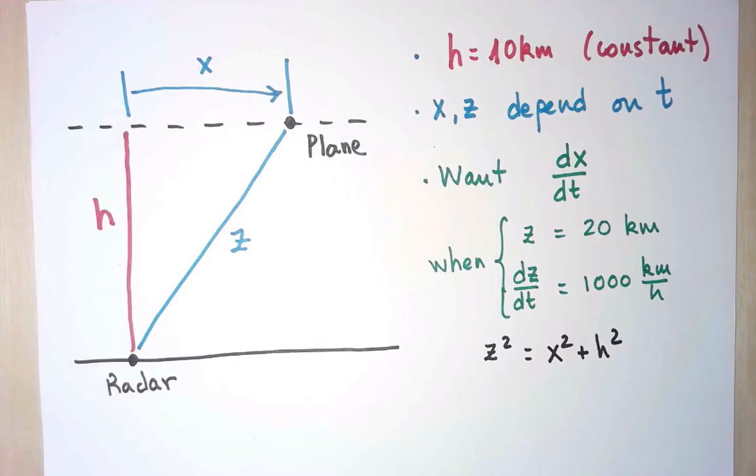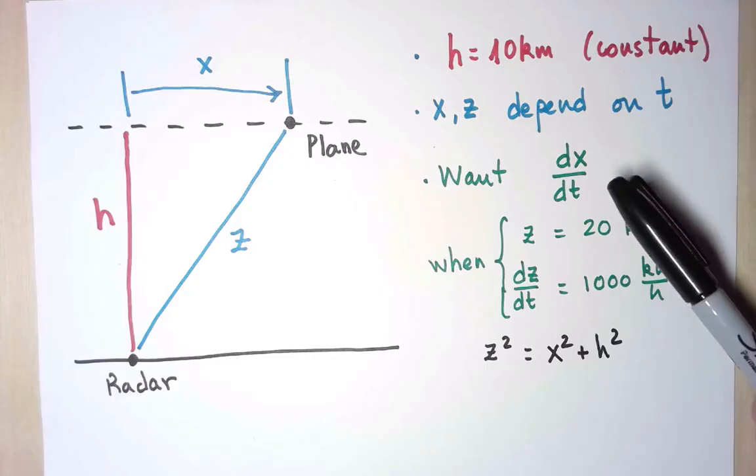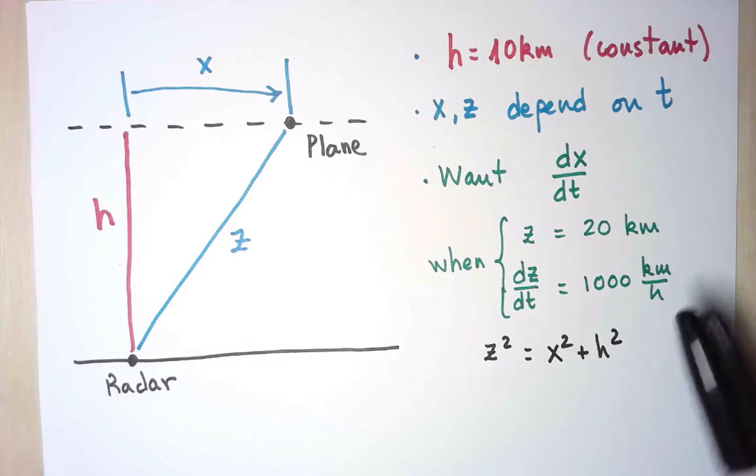What I've done so far is the modeling part of the problem, which is transforming the original question into a calculus question. The information I needed is to know what is constant and what depends on time, figure out exactly what I am trying to compute and the data I have, and figure out what the relation between the quantities is.